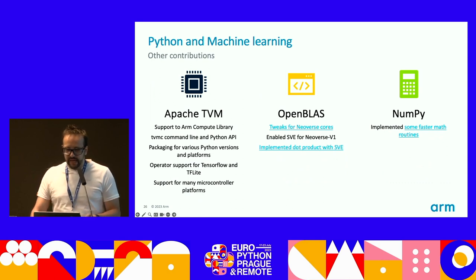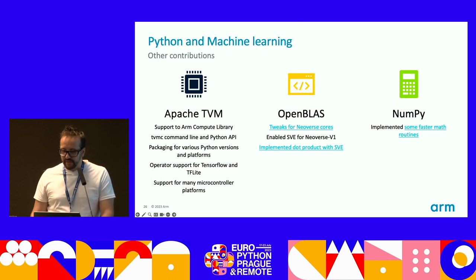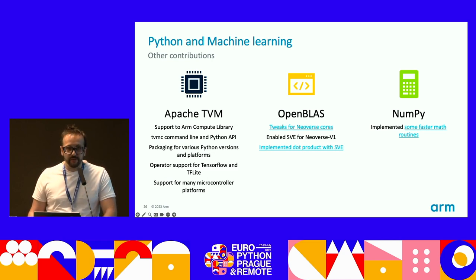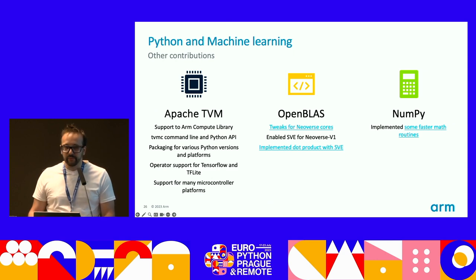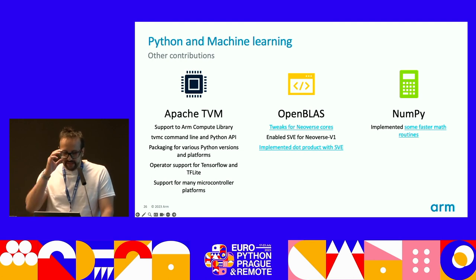I also want to highlight contributions in the machine learning space. First, Apache TVM, a machine learning compiler framework for CPUs, GPUs, and ML accelerators — we added support for ACL, contributed to packaging, and added support for many microcontroller platforms. In OpenBLAS, contributions were around Neoverse cores and SVE (Scalable Vector Extension). And last but not least, we implemented faster math routines in NumPy.